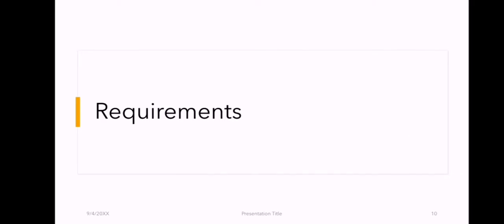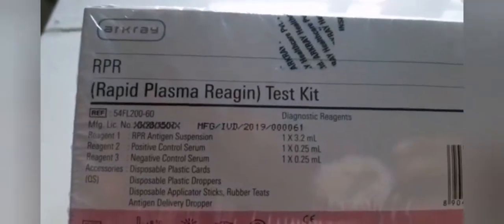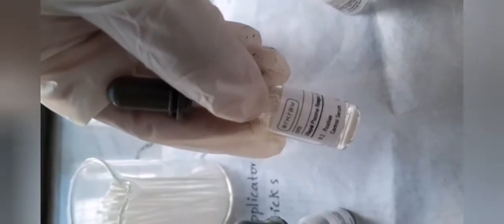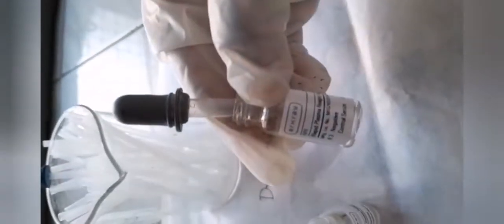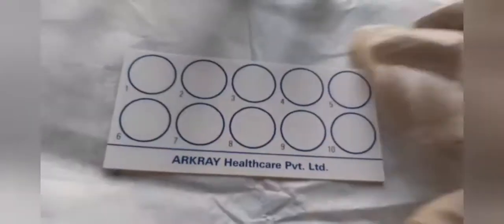The requirements needed are: a Rapid Plasma Reagent test kit, which consists of a test sample serum; a carbon-coated Cardiolipin antigen; positive control serum; negative control serum; saline; applicator sticks; droppers; and a VDRL card.